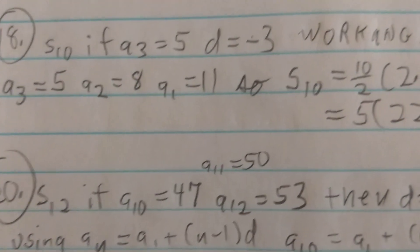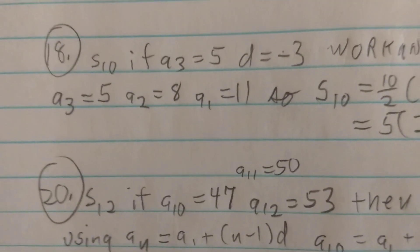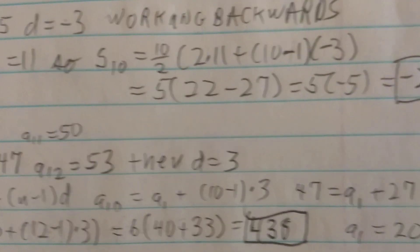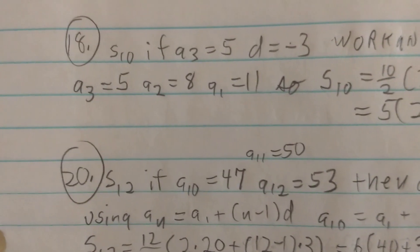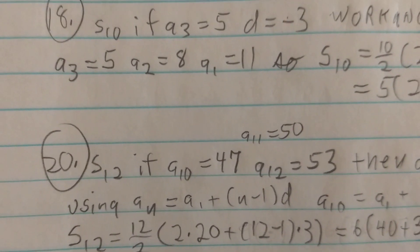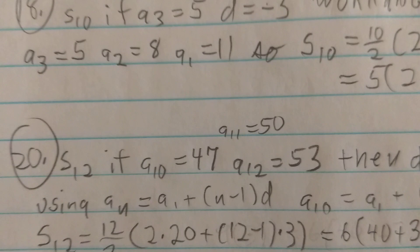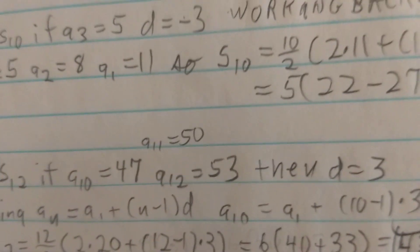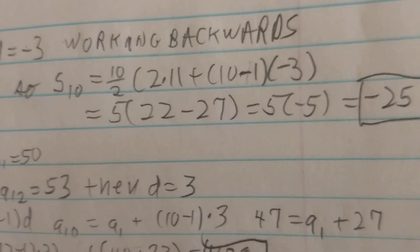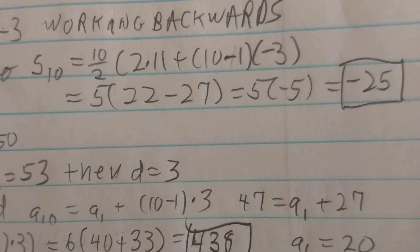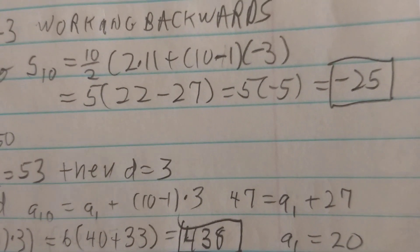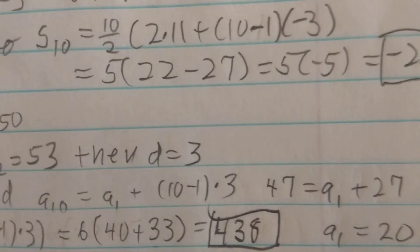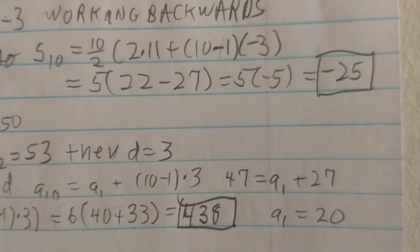For problem 18, find S sub 10 given a sub 3 equals 5 and d equals negative 3. Since d is negative 3, we work backwards from a sub 3 by adding 3: a2 equals 8, and a1 equals 11. Using our formula, S sub 10 is 10 over 2 times 2 times 11 plus 10 minus 1 times negative 3, or 5 times 22 minus 27, which is 5 times negative 5, giving negative 25.